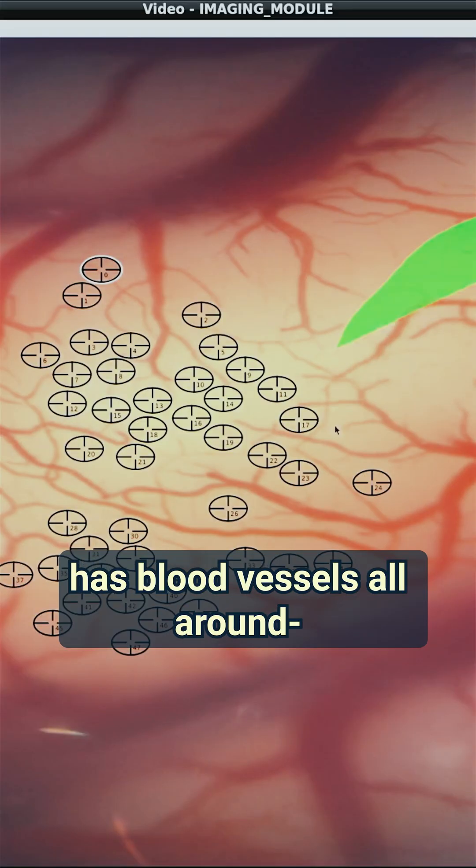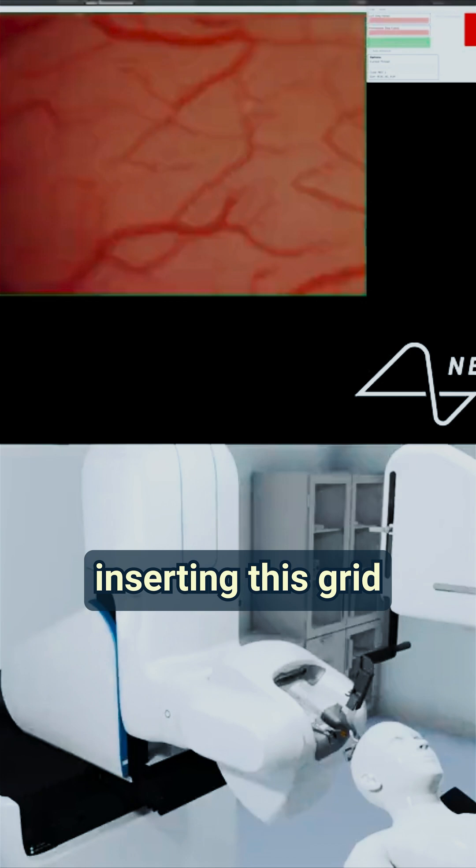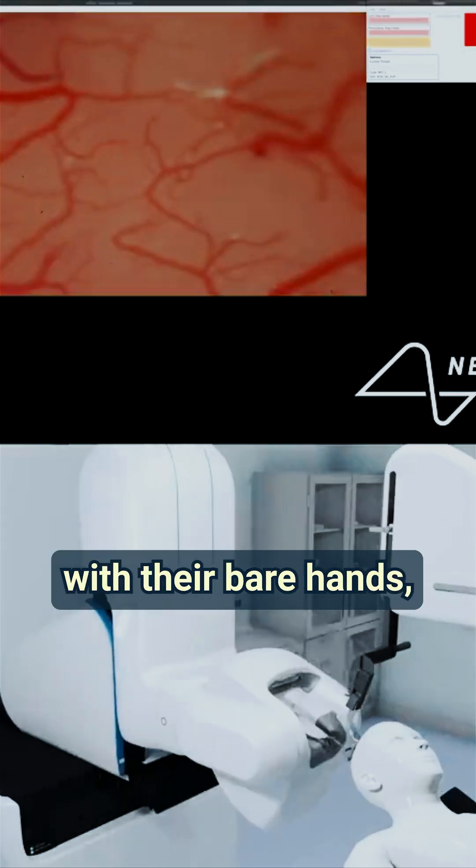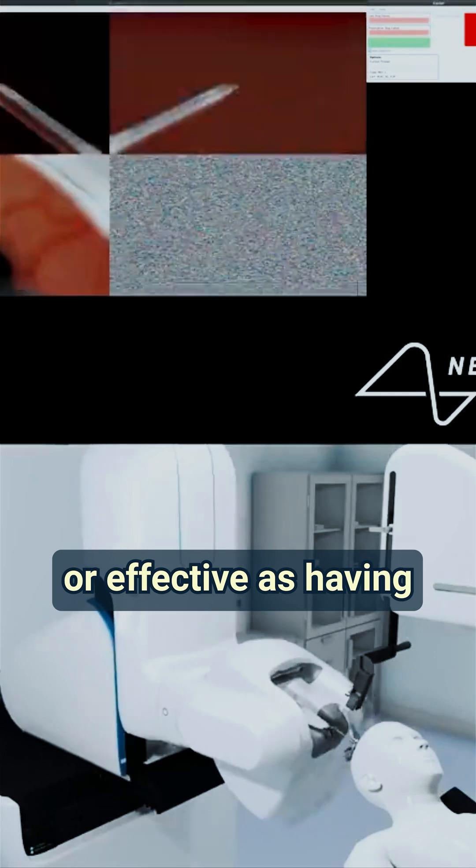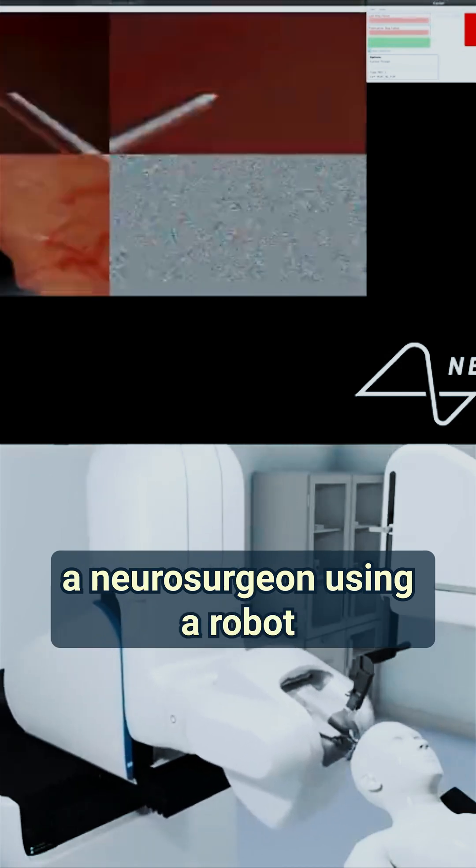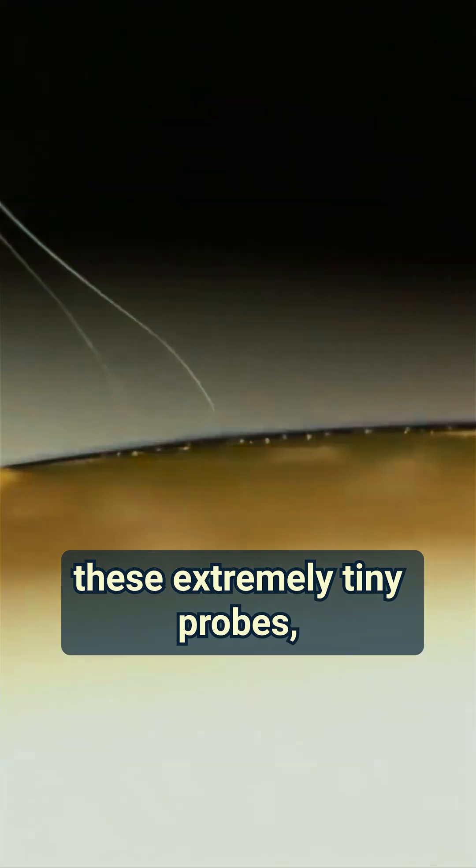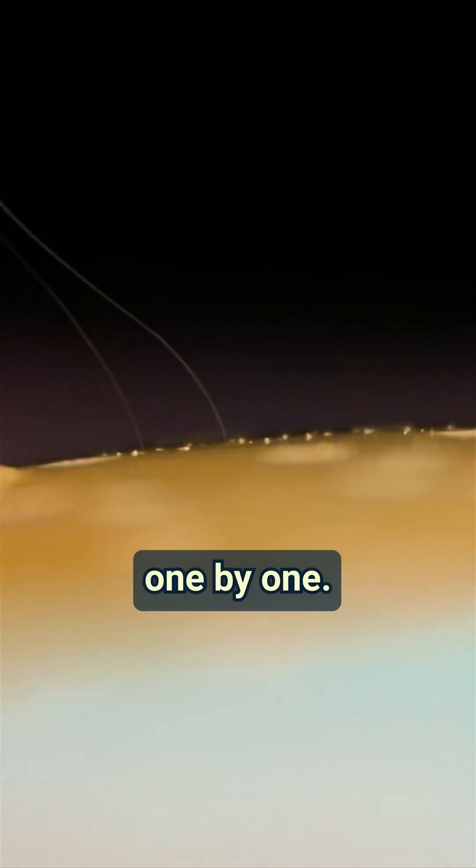Now think about how the brain has blood vessels all around. If you have a neurosurgeon inserting this grid into the brain with their bare hands, they're going to puncture blood vessels, and that's simply not as safe or effective as having a neurosurgeon using a robot to avoid blood vessels and precisely insert these extremely tiny probes one by one.